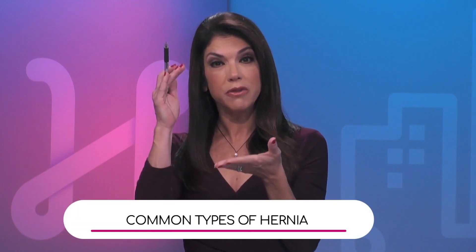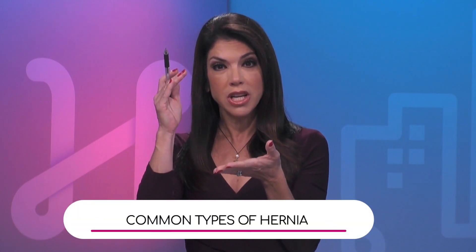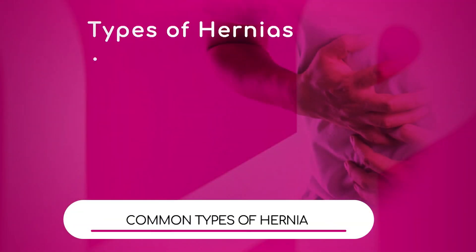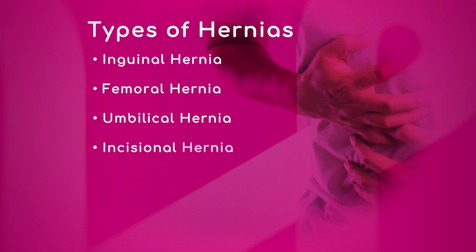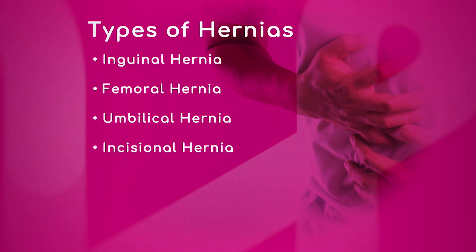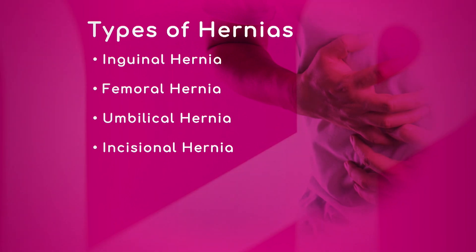We have a list of different kinds of hernia that we're going to be discussing today. Inguinal hernia is the most common type — that's a hernia in the groin, in the inguinal location. A little bit below that is the femoral hernia, which is more common in women, though women will have more inguinal hernias too.